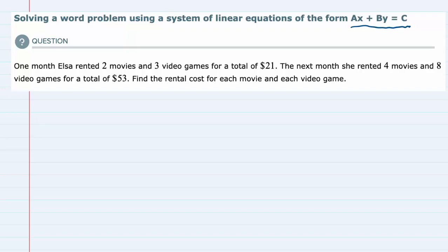Looking at the problem situation, it says one month Elsa rented two movies and three video games for a total of $21. The next month she rented four movies and eight video games for a total of $53. Find the rental cost for each movie and each video game.